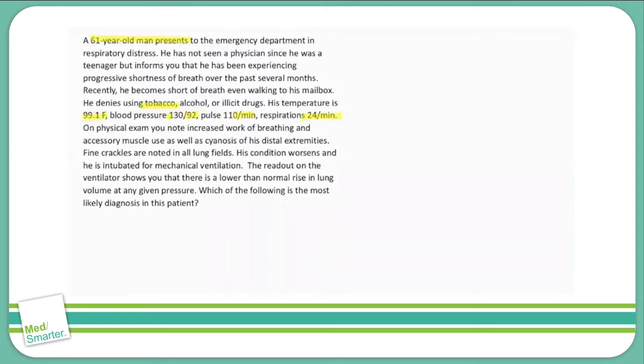On physical exam, you note increased work of breathing and accessory muscle use as well as cyanosis of his distal extremities. We don't know quite yet where this question is heading, but if you ever see in a question stem something like increased work of breathing or accessory muscle use, it's trying to tell you that this is a very severe case of respiratory distress. This is a critically ill patient and we have to treat them as such.